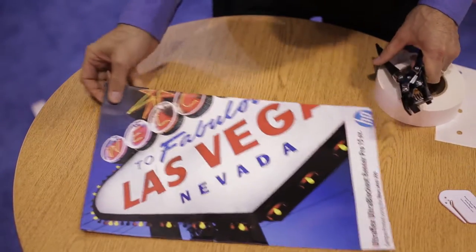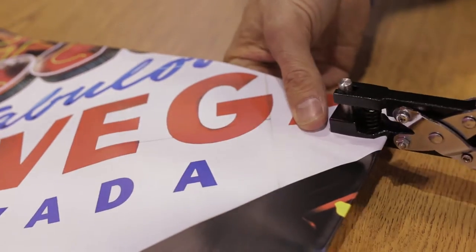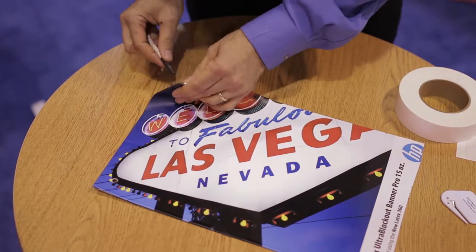Finally, use a Banner-Ups power punch to punch holes through the banner media, the tabs, and the Mega Tape.